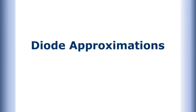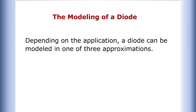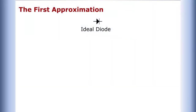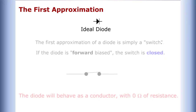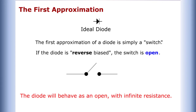Welcome to diode approximations. Depending on the application, a diode can be modeled in one of three approximations. The first approximation treats the diode as an ideal switch: if forward biased, the switch is closed and the diode behaves as a conductor with zero ohms of resistance; if reverse biased, the switch is open and the diode behaves as an open with infinite resistance.